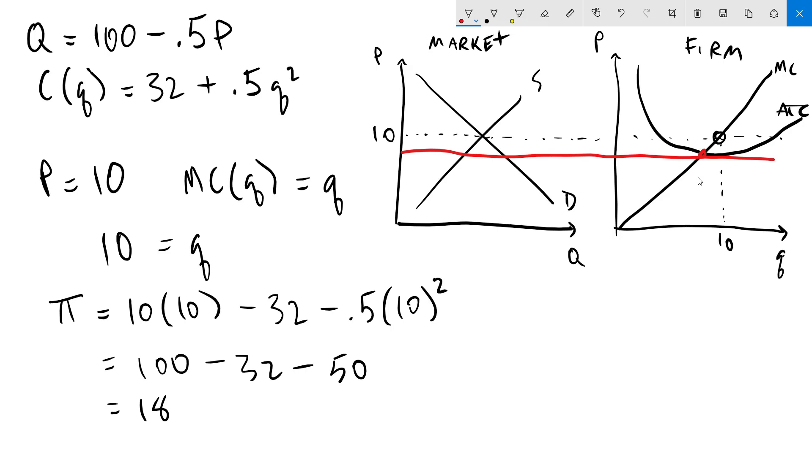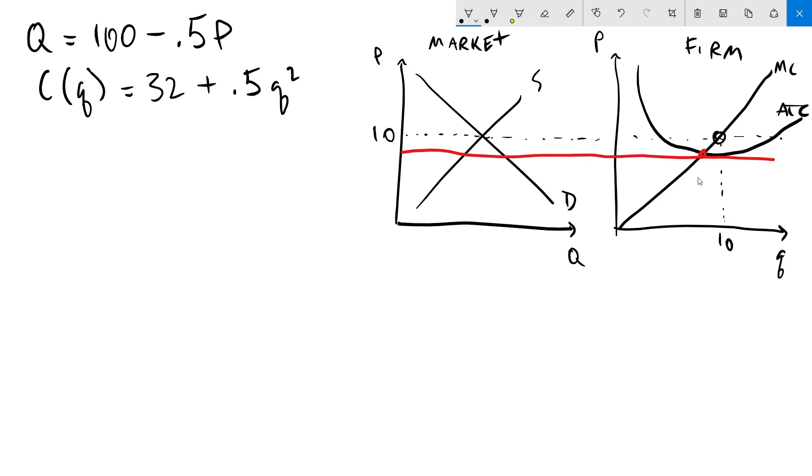Now we need to actually calculate what the minimum point of average total cost is. I'll write out my average total cost function here by simply dividing my cost function by q. I get 32 over q plus 0.5q. We know this is at its minimum point when we set that equal to marginal cost. Marginal cost here is simply q. I'm now going to solve for q. I'm going to subtract 0.5q from both sides, so I get 32 over q equals 0.5q. Multiply both sides by q. Multiply both sides by 2. And now take the square root of both sides and I get q equals 8. I can mark that down in my graph right here. We know that our minimum average total cost happens at an output of 8.